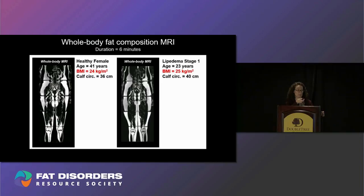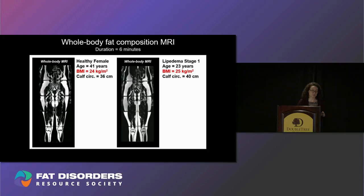These are examples of whole body MRI images from a female without lipedema and a female with stage 1 lipedema. Their BMIs are very similar. The white tissue in the image shows fat surrounding the muscle, which is the darker part. Observing from the top of the image, there is a similar amount of fat deposition at the waist in both females, but as you scan down the legs, you can see a greater amount of fat deposition in the legs affected by lipedema.